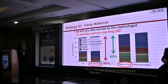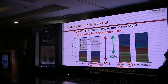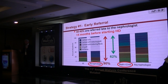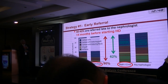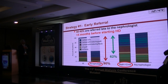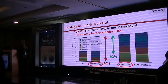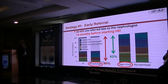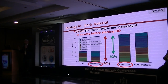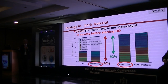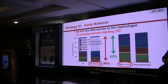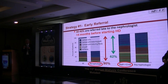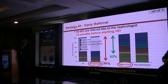Strategy one is early referral. I know you don't have a lot of control over that — it requires education of primary care physicians, internists, cardiologists, and everybody else doing procedures on these patients. They need to know to refer the patient to nephrology early. In the United States, those who saw no nephrologist had about a 90% catheter rate at dialysis start. Even those who saw a nephrologist for a full year had 62% catheter use — still very high, which tells me there is a process failure, not a knowledge failure.